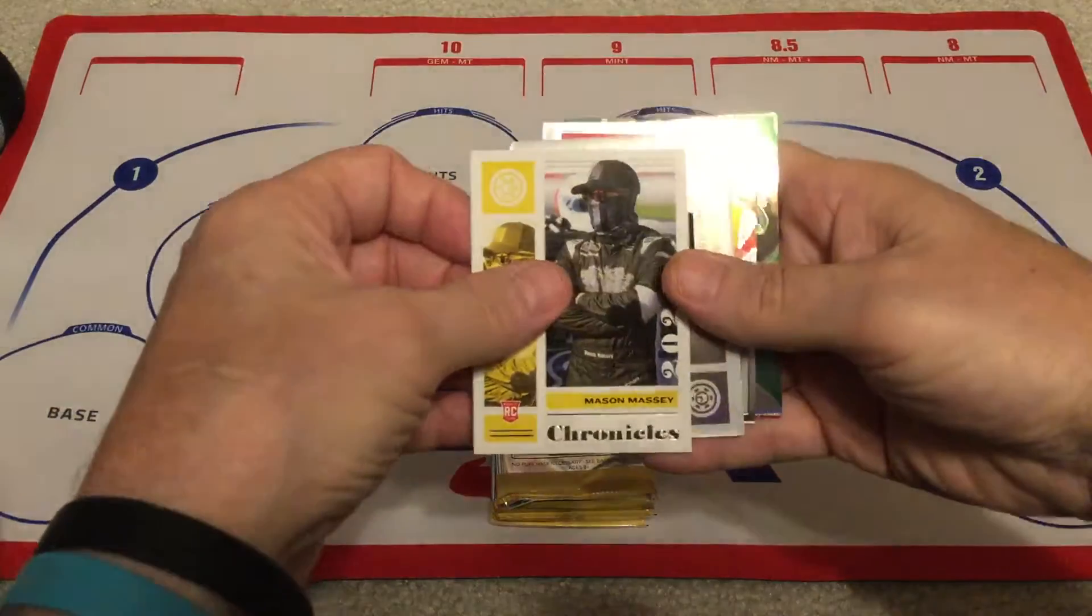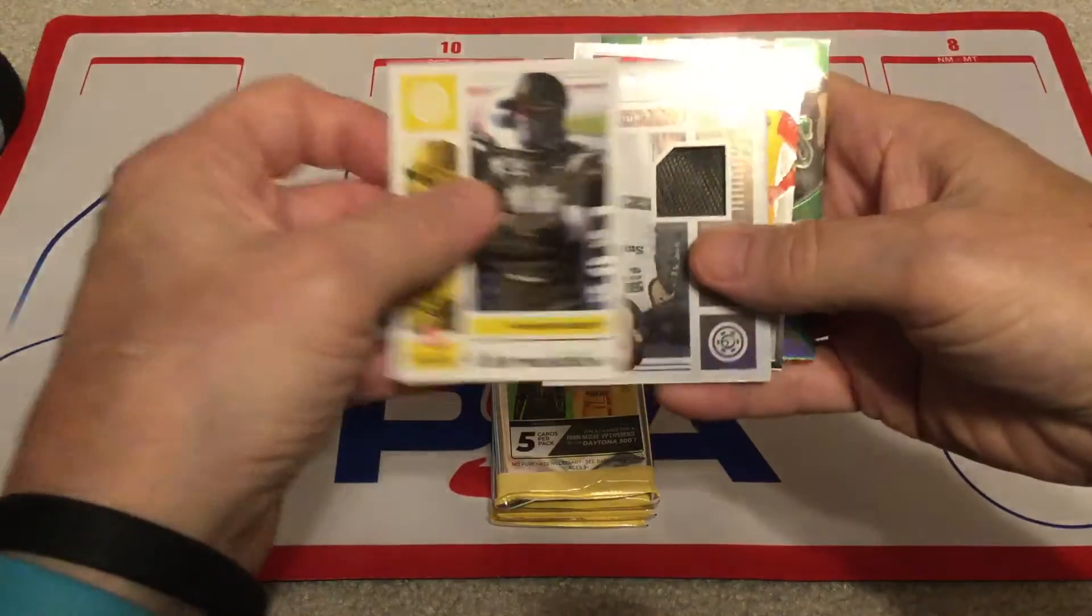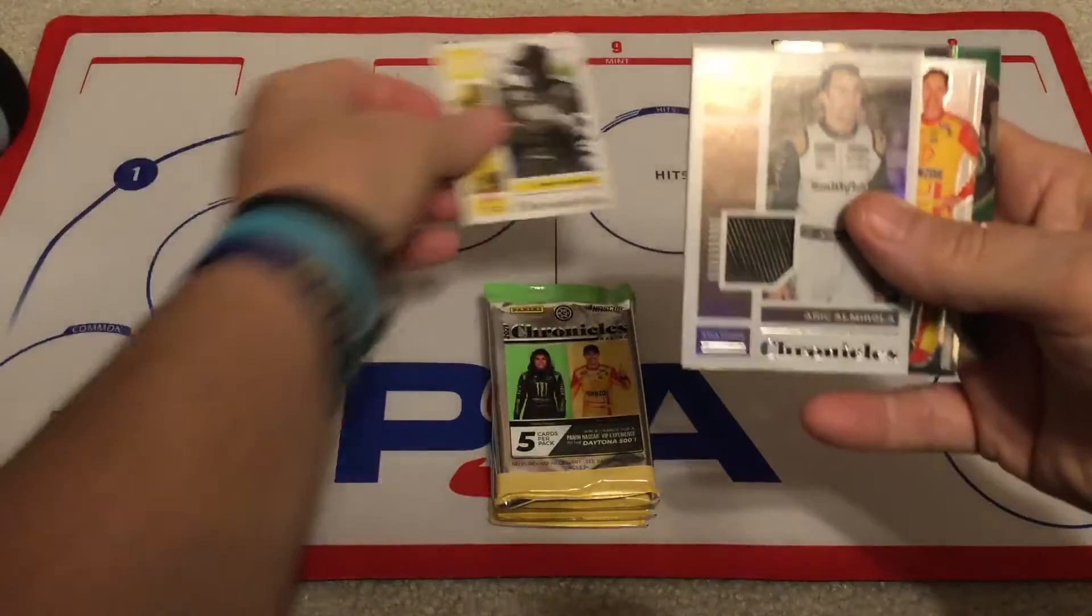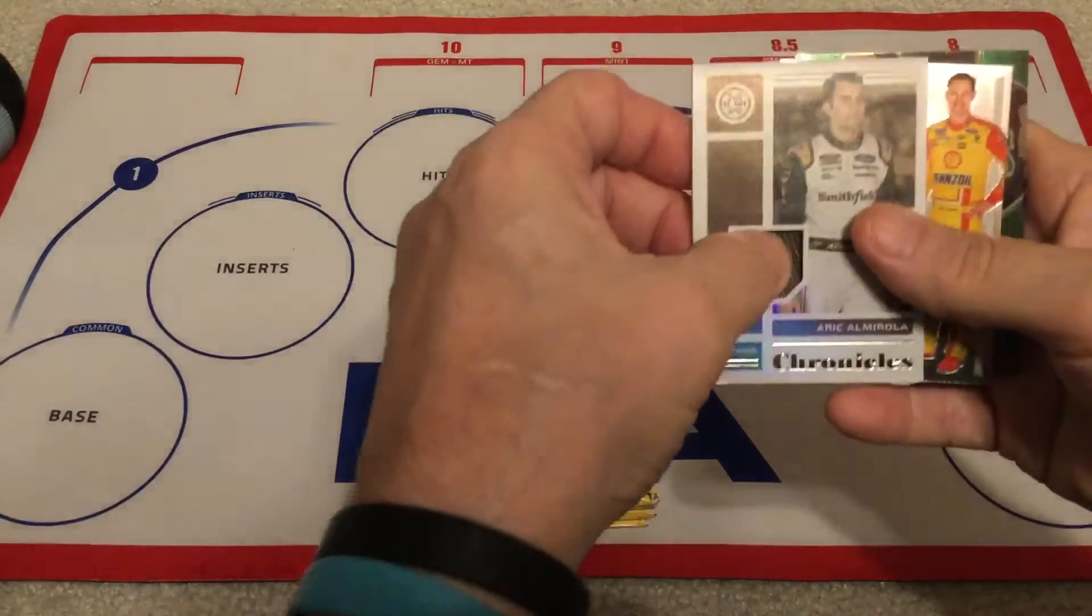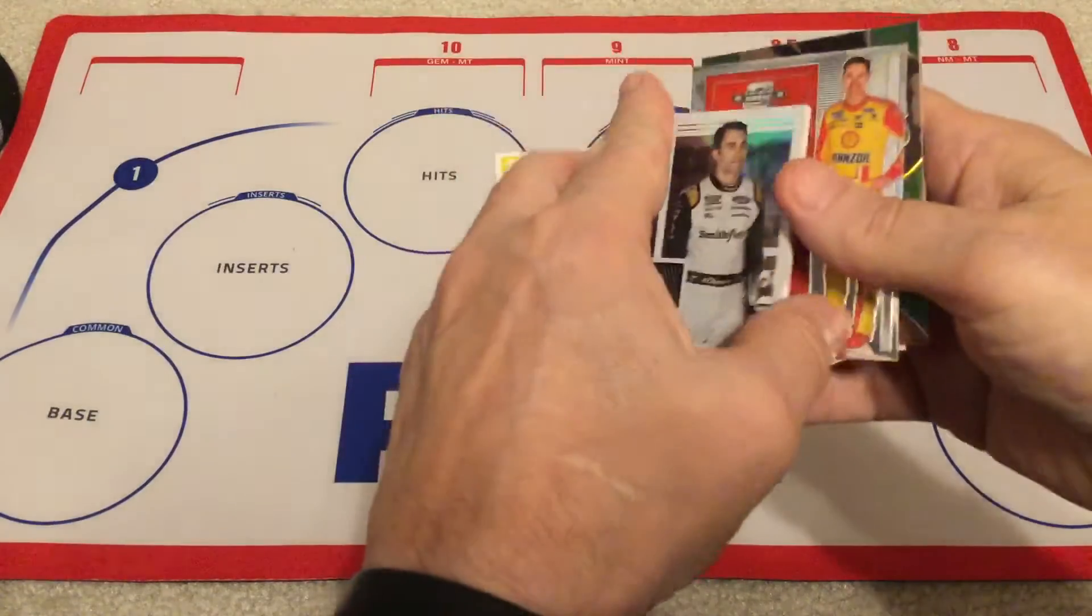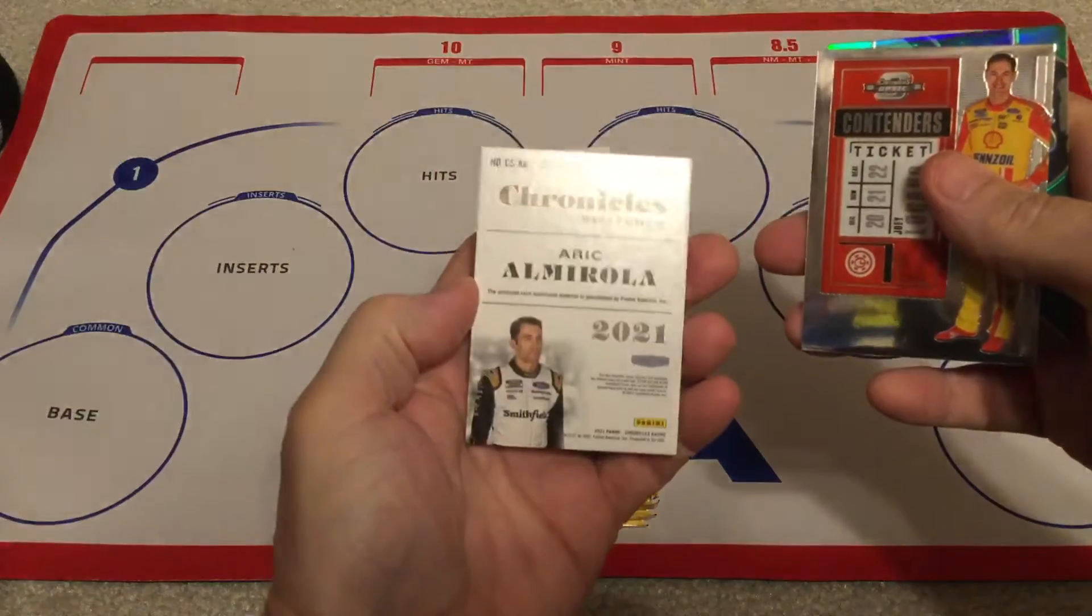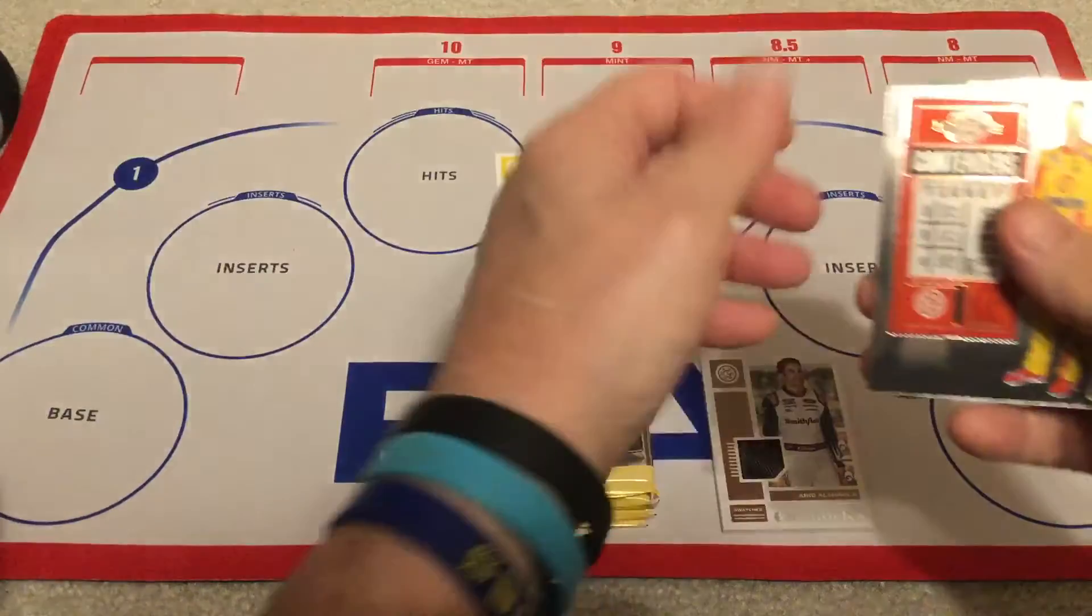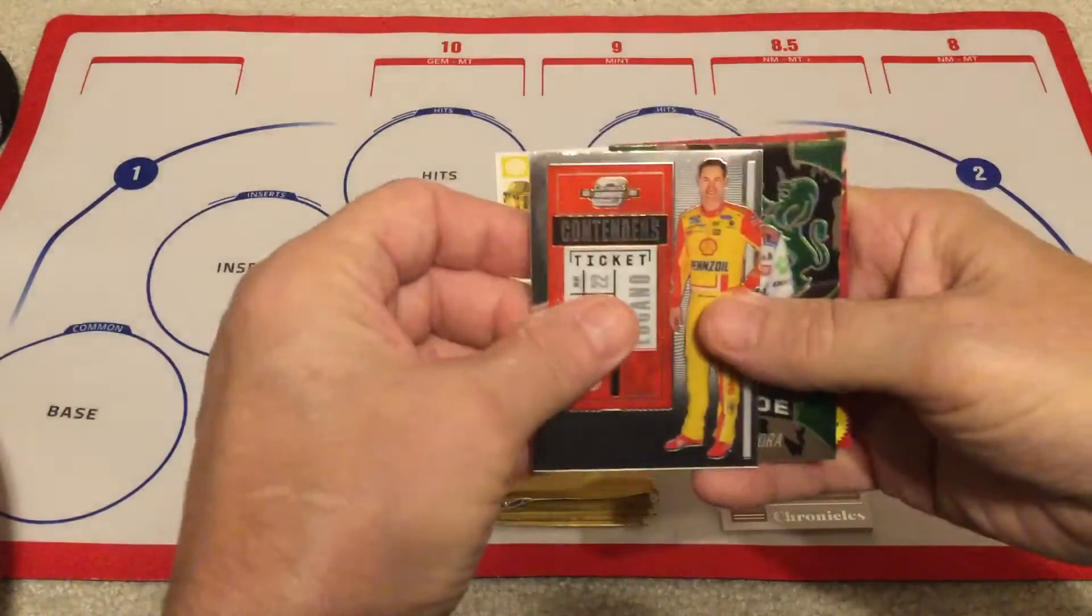So there's Mason Massey and we're gonna get a tire of Eric Almirola, cup driver. So at least it's a cup driver and it's a tire. Oh yeah, and is it numbered? No, no number. We really haven't got a whole lot of numbers out of these things.